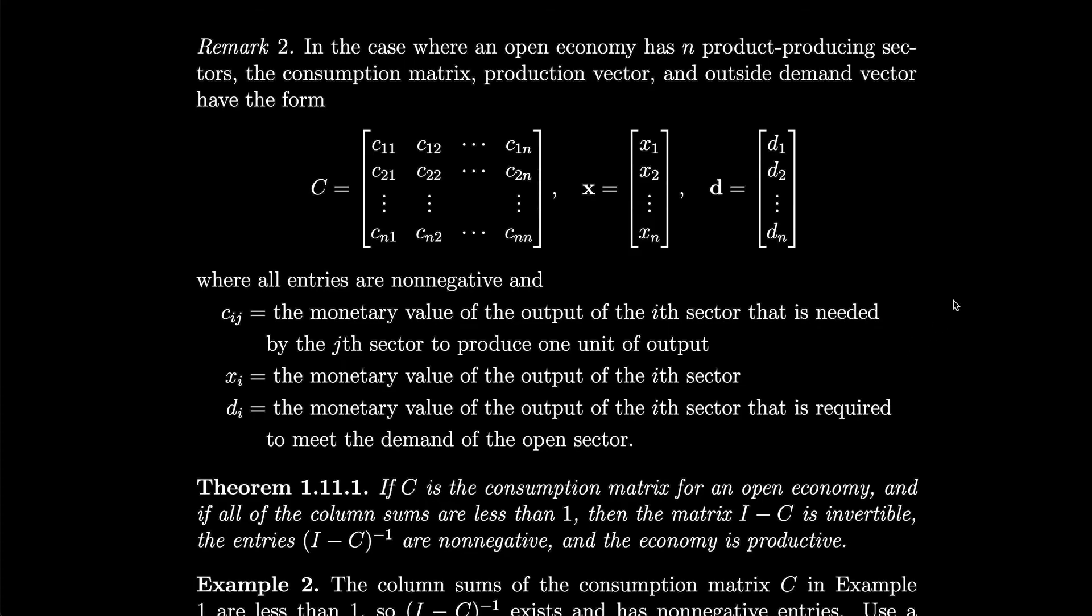In the case where an open economy has n product-producing sectors, instead of just three like we were looking at, the consumption matrix, production vector, and outside demand vector have this generalized form, where all of the entries are nonnegative, and the c_ij are the monetary value of the output of the i-th sector that is needed by the j-th sector to produce one unit of output. x_i is the monetary value of the output of the i-th sector, and d_i is the monetary value of the output required to meet the demand of the open sector. If C is the consumption matrix and all column sums are less than 1, then I - C is invertible, the entries of (I - C)^(-1) are nonnegative, and the economy is productive.